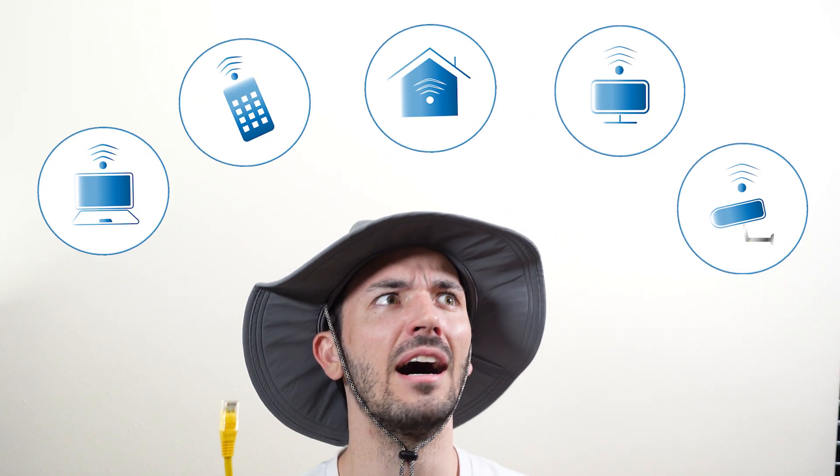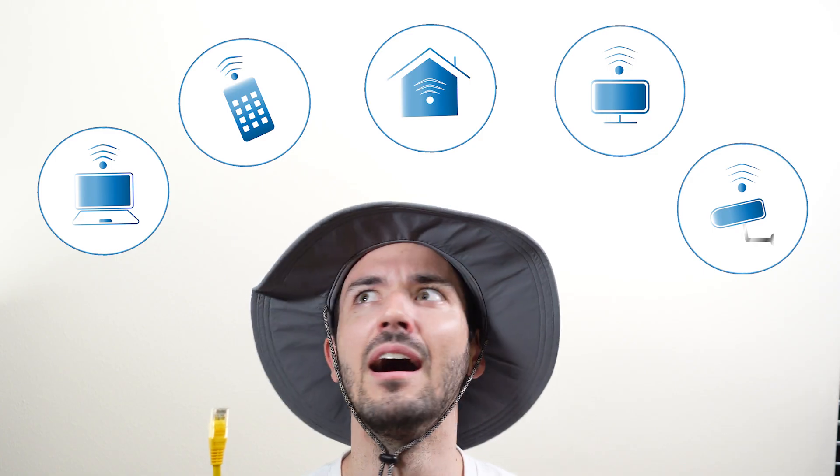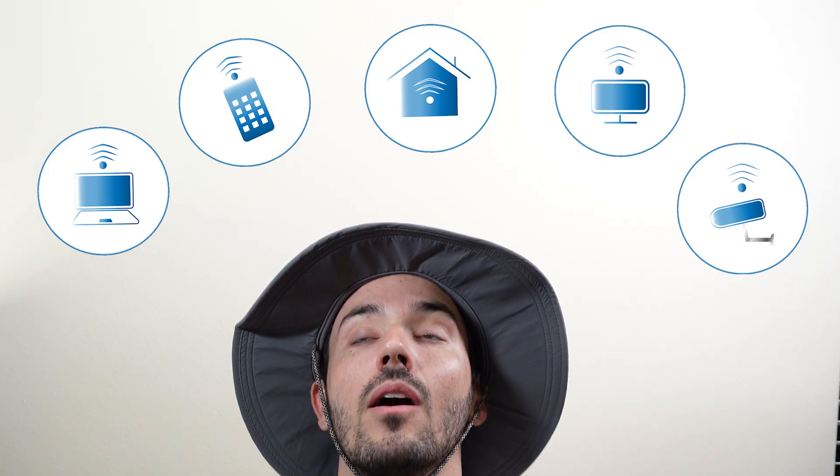The problem with having a modem or ONT is that it doesn't actually allow more devices. You can have a single device plugged directly into it and that's the only device that'll have internet — only one device. And that's where routers and switches come into play.